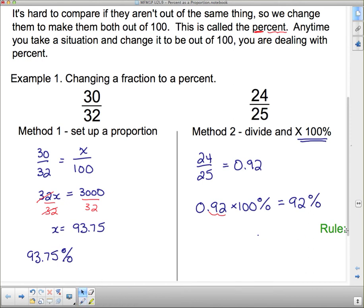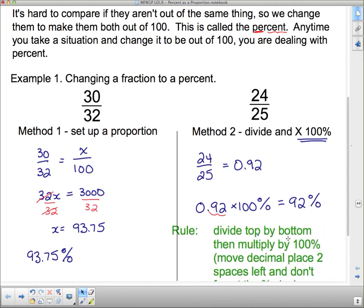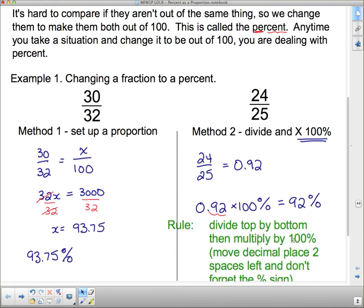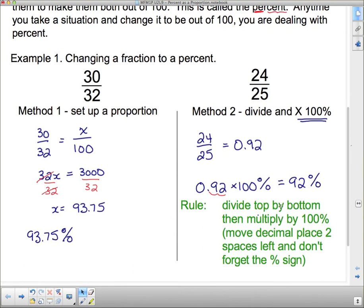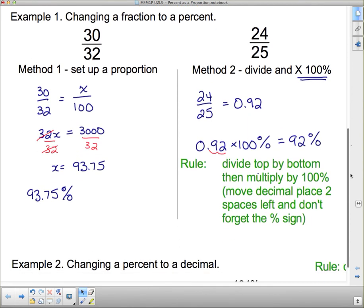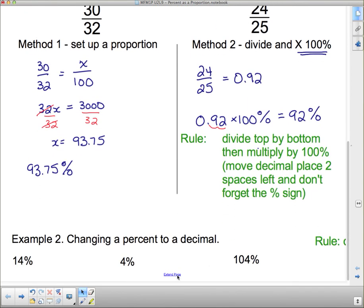Who did better? The person who got 30 out of 32 did better than the person who got 24 out of 25. The rule for working in this particular manner is to divide the top by the bottom, then multiply by 100%. Move the decimal place two places, and don't forget that percent sign.